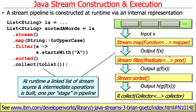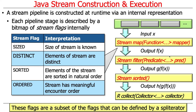If you want to learn more about this, there's a nice article by Brian Getz, who's one of the Java chief architects, that talks about this. Now, the way this works internally — each of these stages in the pipeline is described by a bitmap of stream flags. Each operation has a bitmap that keeps track of the characteristics or properties of that particular operation.